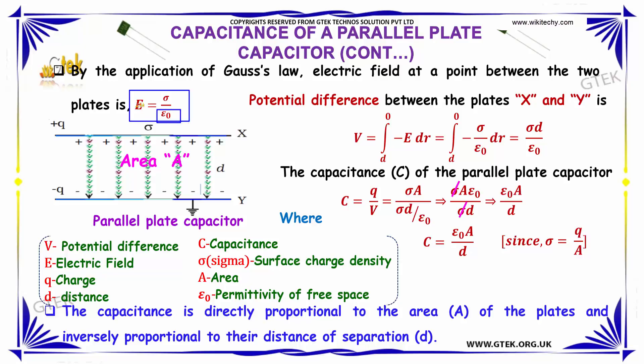The potential difference between plates X and Y is V = ∫(d to 0) -E dr. On integrating, this becomes -σ/ε₀ ∫dr. Applying the lower and upper limit values, V = σd/ε₀.